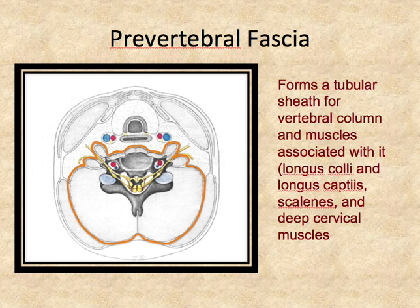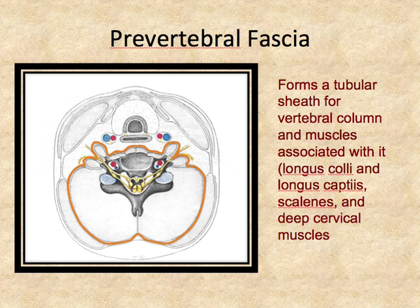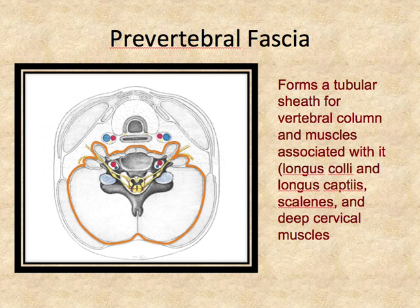The next fascial layer is called the prevertebral fascia, the deepest layer relative to the pretracheal and investing fascia. It encloses the vertebral column and associated musculature, blood vessels, and nerves lateral to the vertebral column. You'll see muscles you haven't seen yet — you can appreciate from the atlas muscles like the longus coli and longus capitis. The scalene muscles are also ensheathed by this fascial layer and will be really important for locating other structures of the neck.